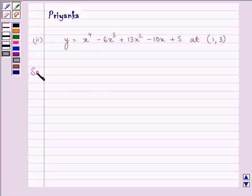Let's proceed with the solution quickly. Let us rewrite: y is equal to x raised to the power 4 minus 6x cube plus 13x square minus 10x plus 5.